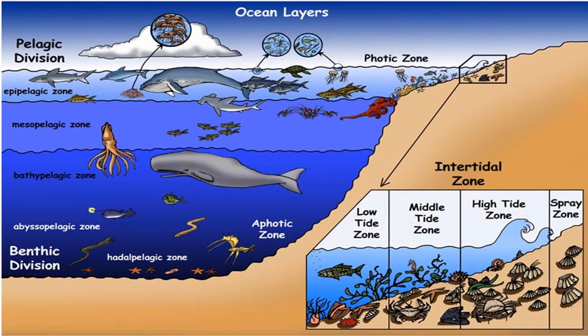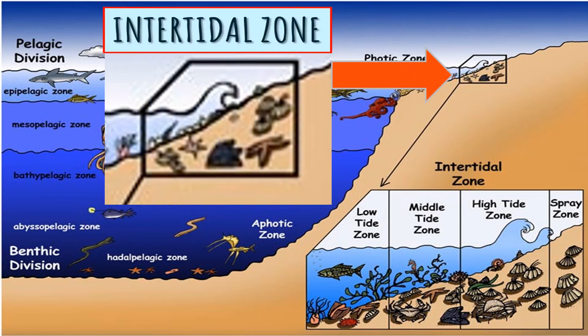That is all about the intertidal zone. As you look at this diagram, the intertidal zone is just a small piece of the ocean layer. When zoomed out, the sub-zones of the intertidal zone include the low tide zone, middle tide zone, high tide zone, and spray zone.